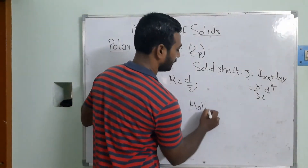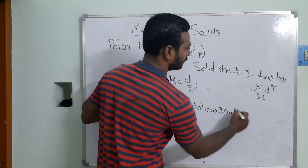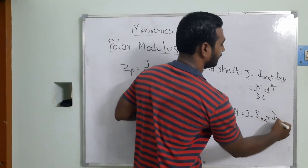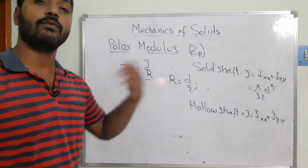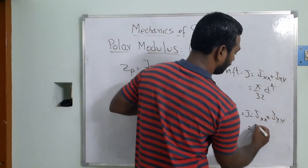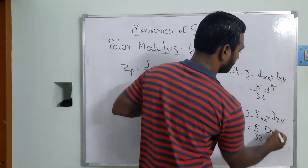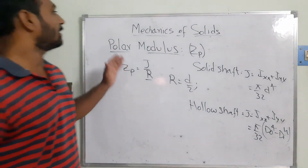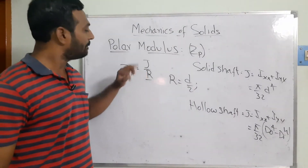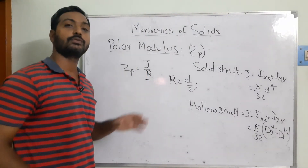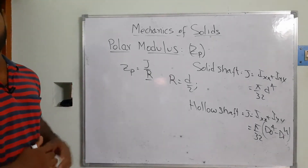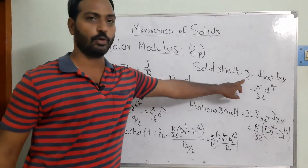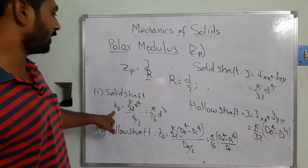For a hollow shaft, J is again equal to I_xx plus I_yy, as we have defined in engineering mechanics. In this case, J equals π/32 × (D⁴ − Di⁴), where D is the outer diameter and Di is the inner diameter. The polar modulus is then calculated as the ratio of the polar moment of inertia to the outer radius.